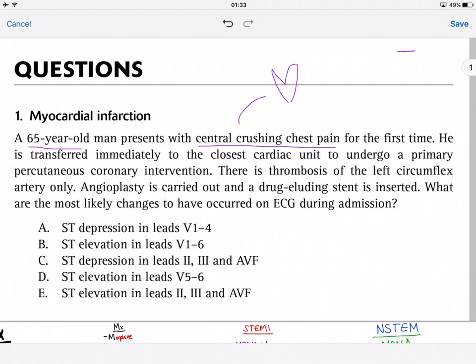He's transferred immediately to the closest cardiac unit to undergo primary percutaneous coronary intervention. There is thrombosis of the left circumflex artery only. Angioplasty is carried out and a drug-eluting stent is inserted. What are the most likely changes to have occurred on ECG during admission?